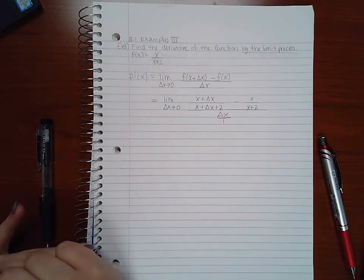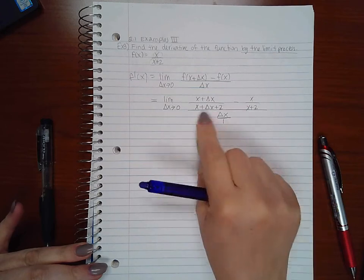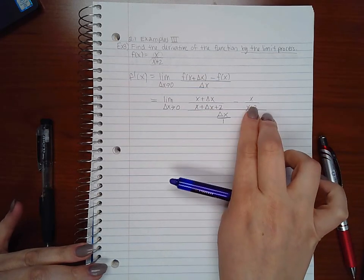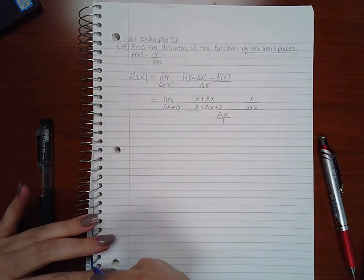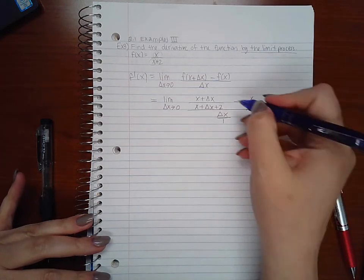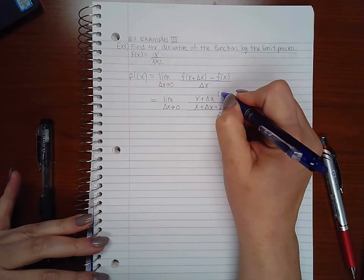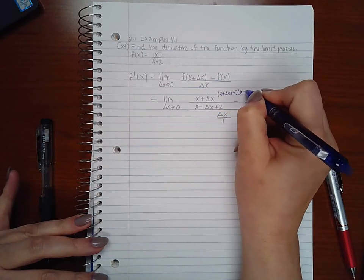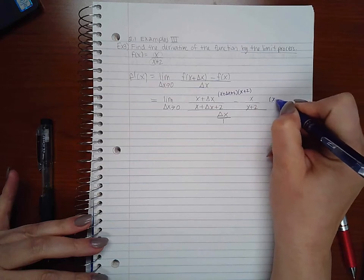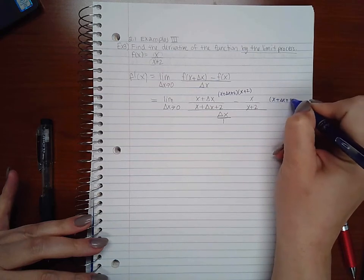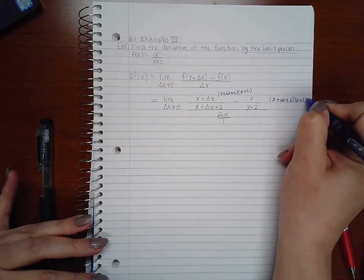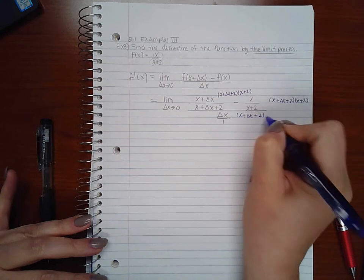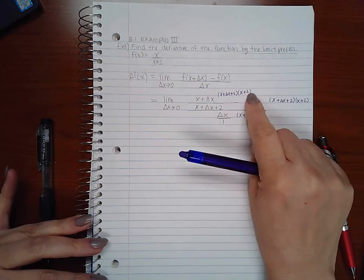Since they're all completely different from one another and since I don't know what x and delta x are, I don't know that this is a multiple of this, therefore I can't just use one of them as the LCD. So what I'm going to do is multiply by x plus delta x plus 2 times x plus 2 to every single fraction. I don't use the one because when I multiply this by one it's just this expression.